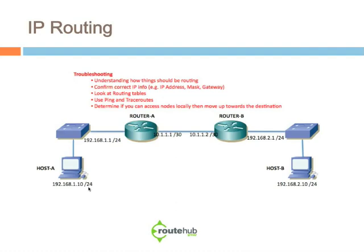Troubleshooting routing can be pretty difficult, but most routing issues are not complex — they are very straightforward. The first thing I usually do is understand how things should be routing. Maybe there are multiple routers connecting off of this segment for host A's subnet, or multiple interface cards connecting to a different network across a different segment. Understanding how things should be routing normally is the starting point for working toward the destination to find the problem.